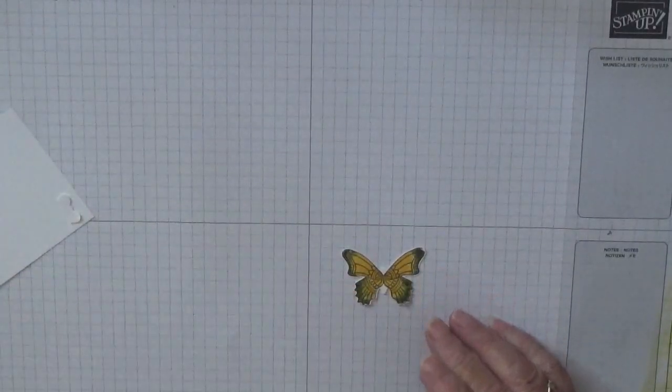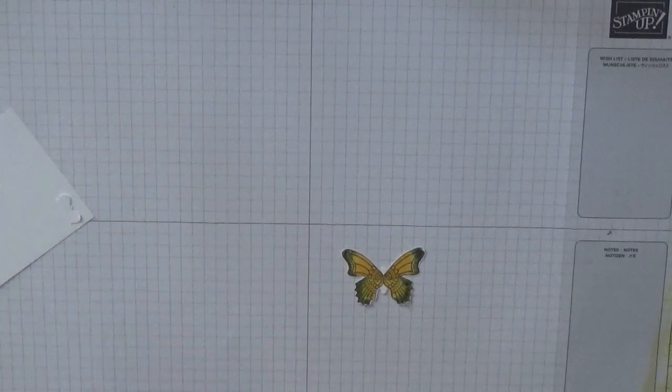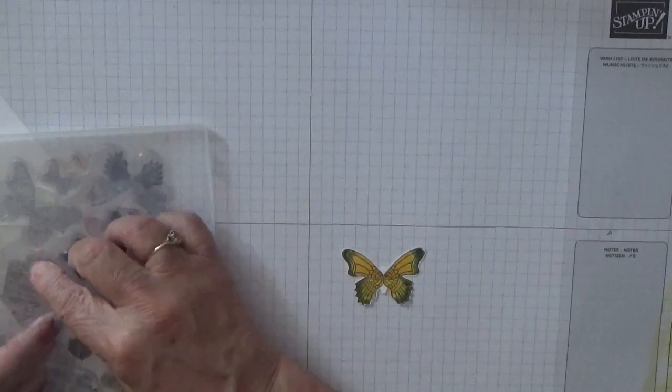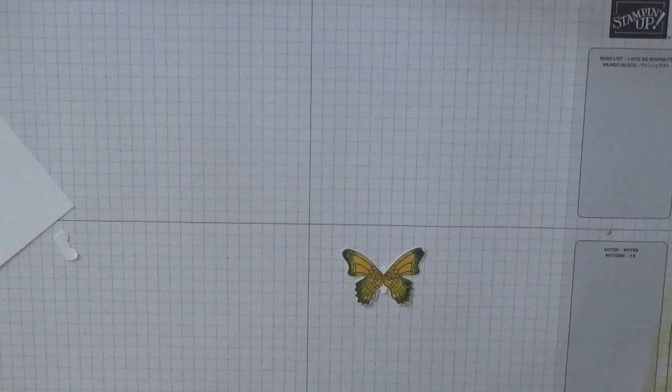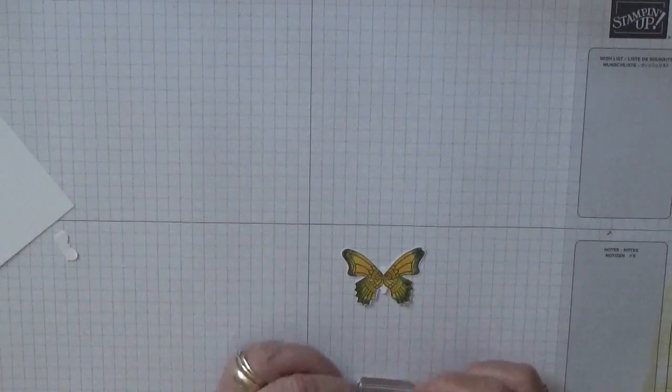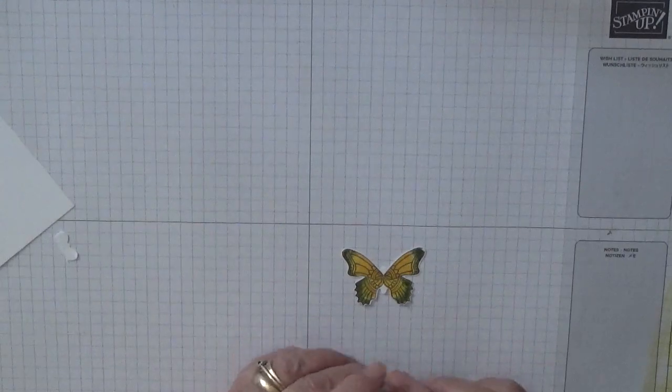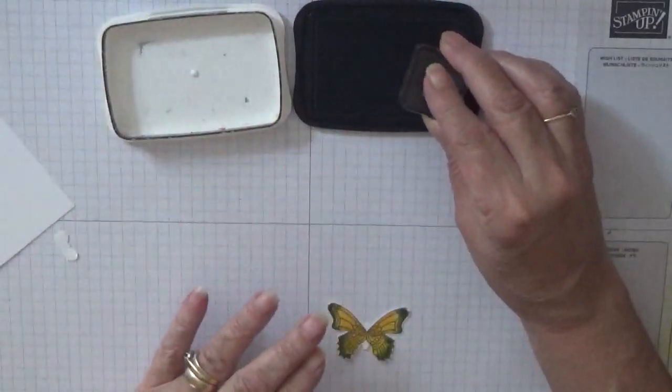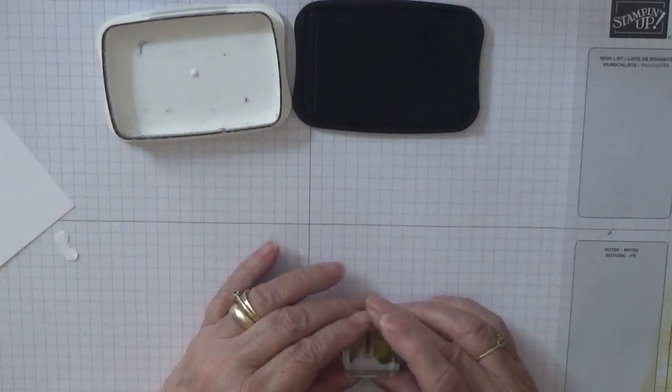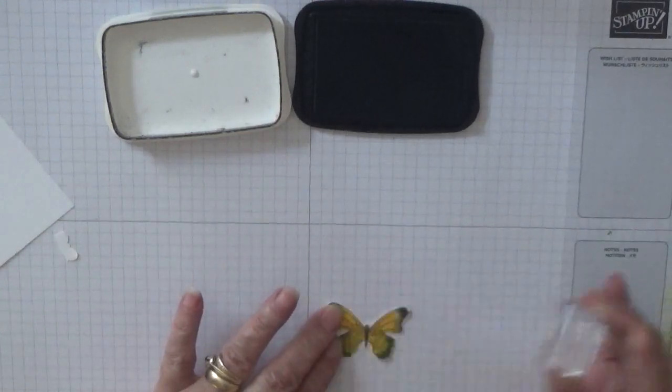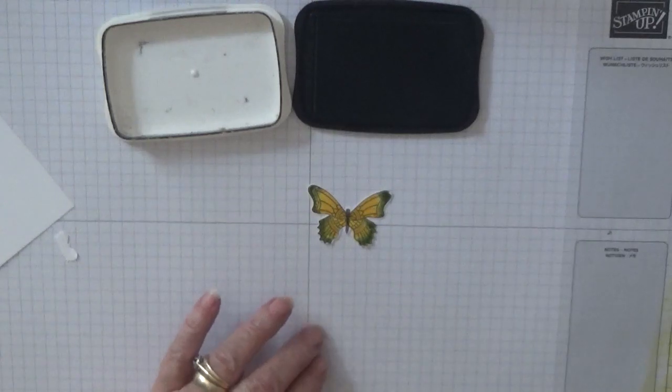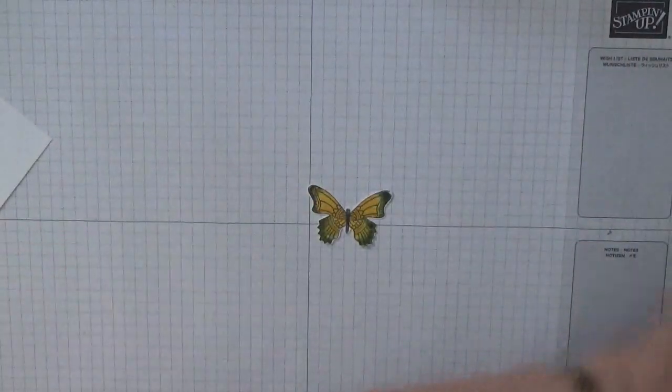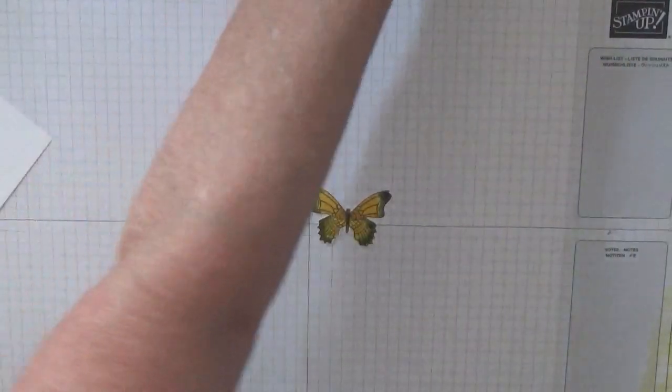That is how I done the butterfly, and then punched it out with the duo butterfly punch. One thing I did forget to do was the body of the butterfly. I don't know why—it's just something I always seem to forget on butterflies.